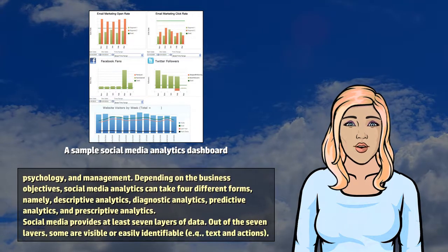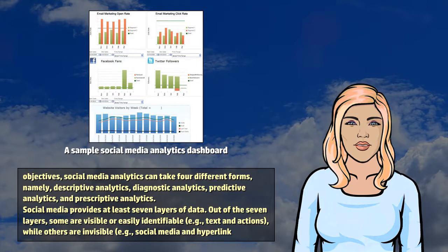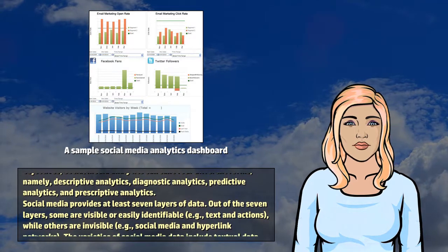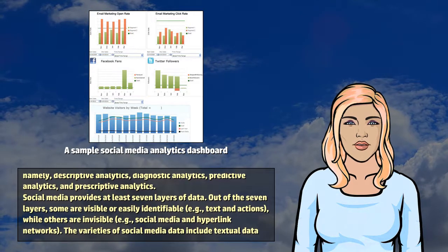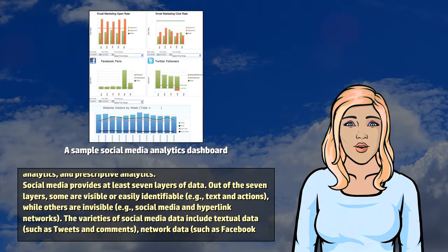Social Media provides at least seven layers of data. Out of the seven layers, some are visible or easily identifiable, for example text and actions, while others are invisible, for example social media and hyperlink networks.